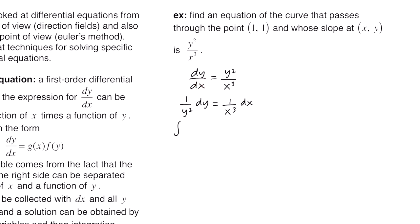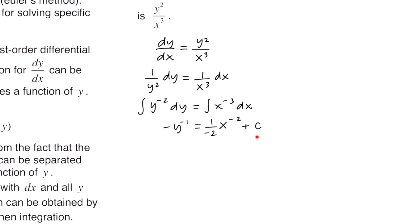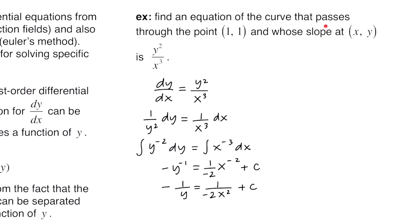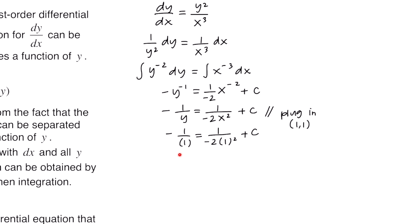Next we integrate both sides. To integrate 1/y², we rewrite it as y⁻², and similarly x⁻³ on the right. After integrating, we get -1/y on the left and -1/(2x²) plus c on the right. The curve passes through the point (1, 1), so we plug in 1 for x and 1 for y. On the left we get -1, and on the right -1/2, so c = -1/2. We plug c back into the equation.